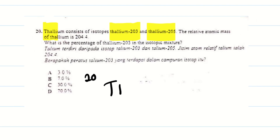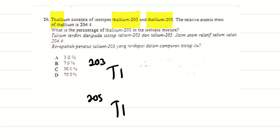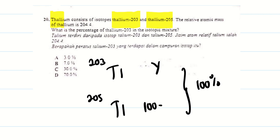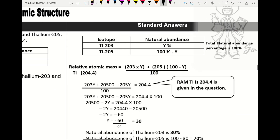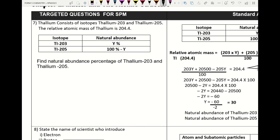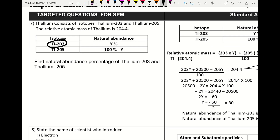The abundance percentage of thallium-203 is not given, so we represent it as y. Since the total percentage is 100%, thallium-205 will be represented as (100 − y). The relative atomic mass of thallium is given as 204.4. We set up the equation using these values.